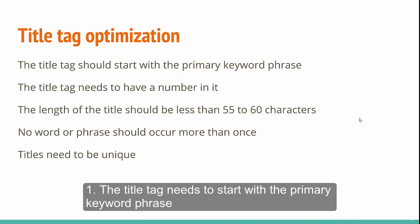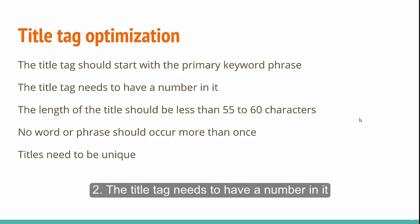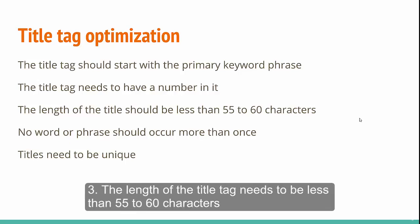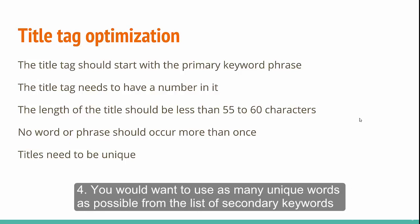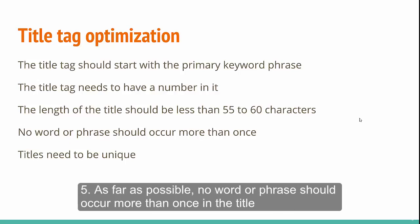The title tag needs to start with the primary keyword phrase. The title tag needs to have a number in it. The length of the title tag needs to be less than 55 to 60 characters. You would want to use as many unique words as possible from the list of secondary keywords. As far as possible, no word or phrase should occur more than once in the title.